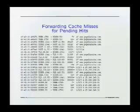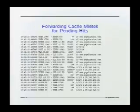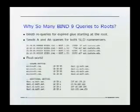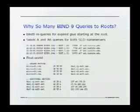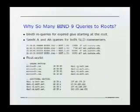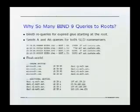BIND 9 is the only software that is smart enough to realize that it's expecting a reply for this name any second now, and it postpones later queries until that reply comes back. But on the other hand, BIND 9 still sends a lot of queries to the roots. One of the reasons is that it sends A and A6 queries for expired name server records starting at the root — so when the cached glue record expires, it doesn't start at the top-level domain, it starts back at the root, perhaps because it doesn't trust the cached data for the top-level domain.